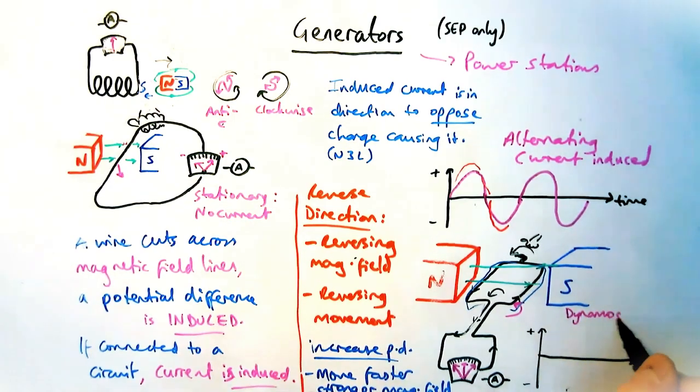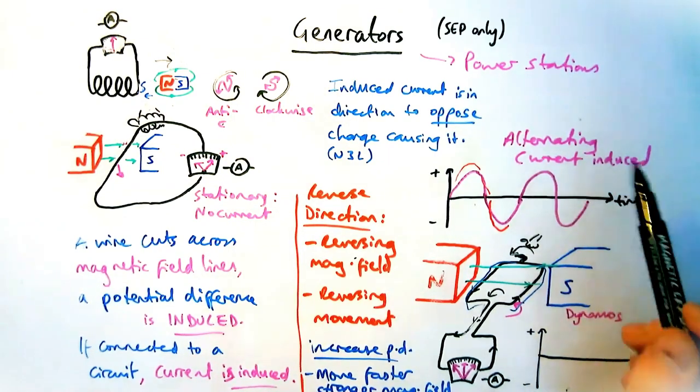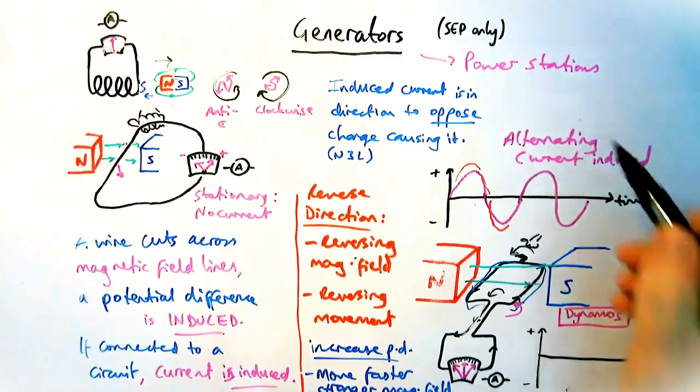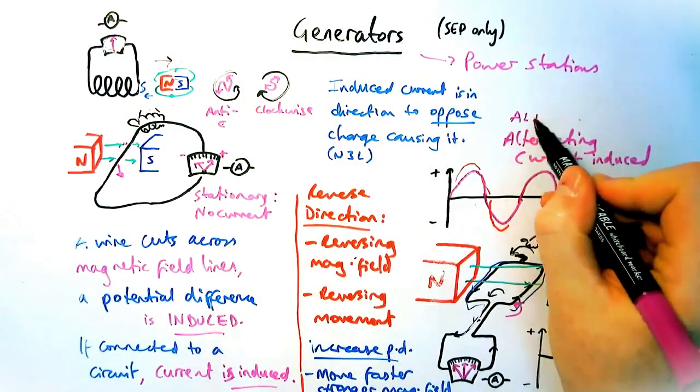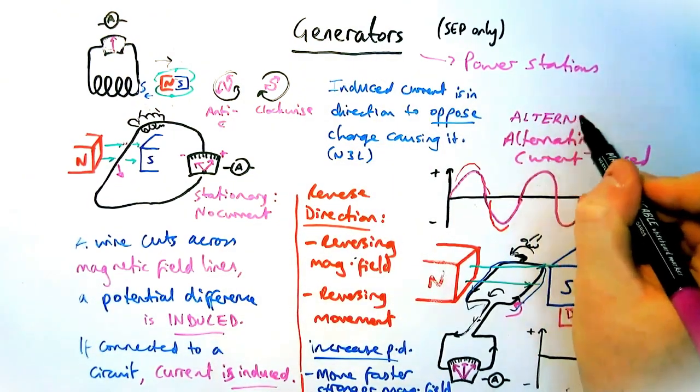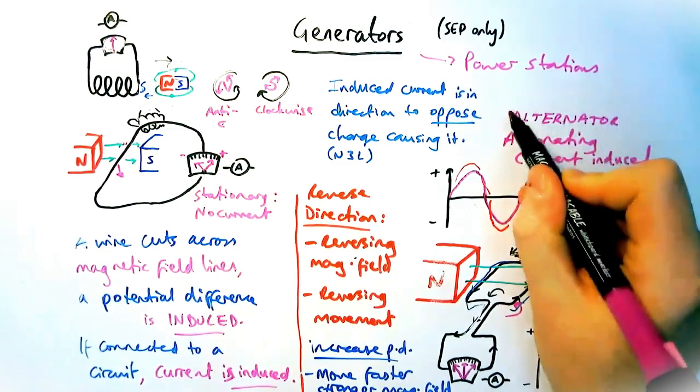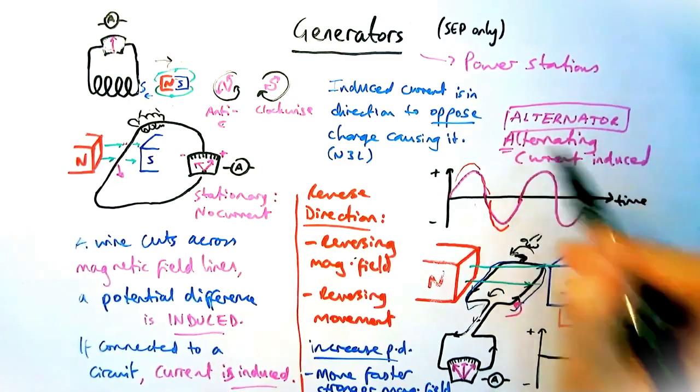Now, the last thing to do with this topic is learning about what a dynamo is. So a dynamo is a type of generator, whereas an alternating current is produced. Sometimes that's called an alternator. So it's a type of generator that produces alternating current.